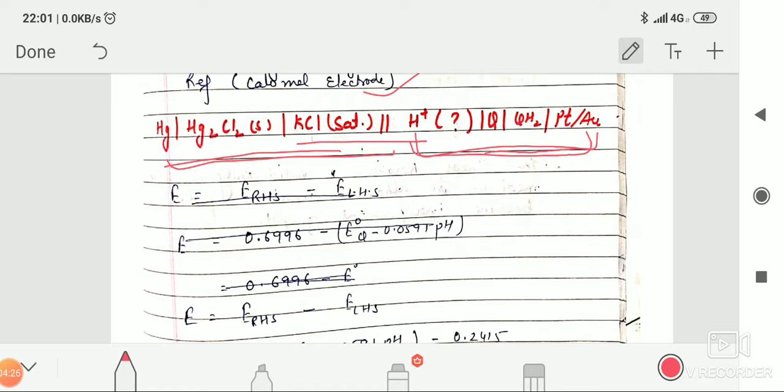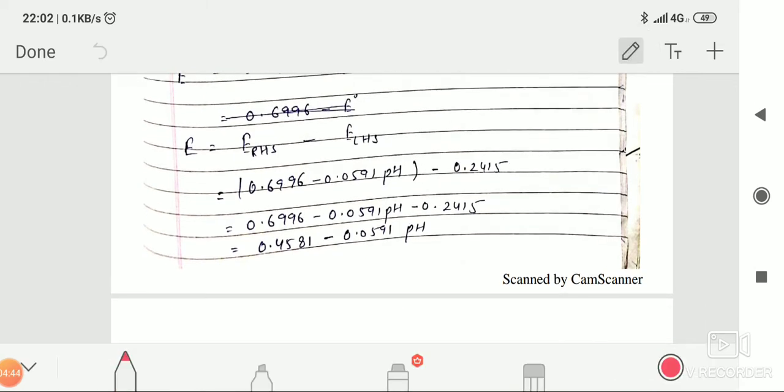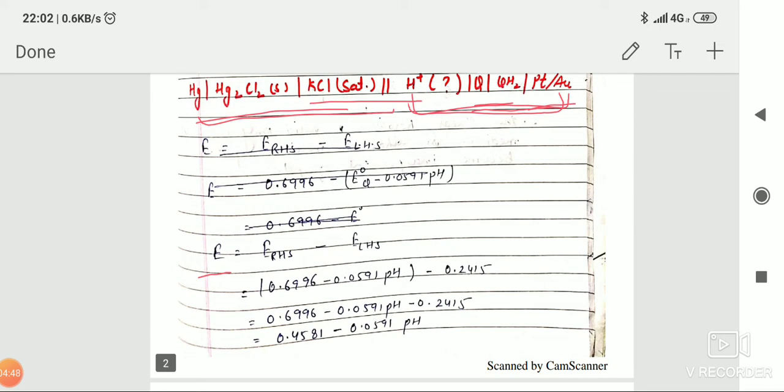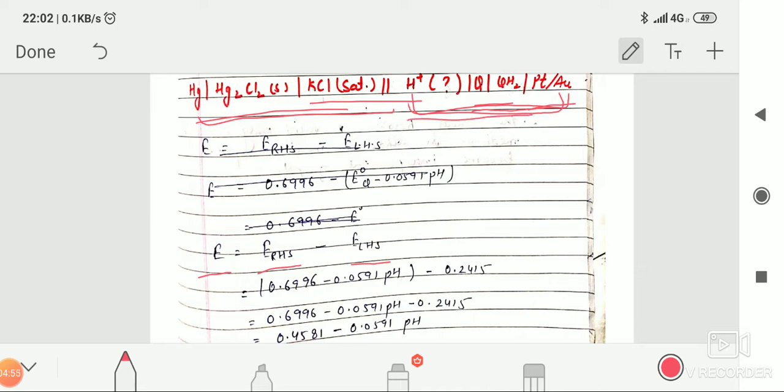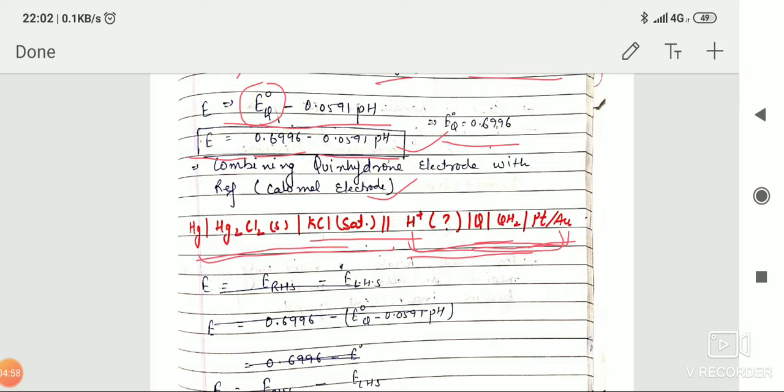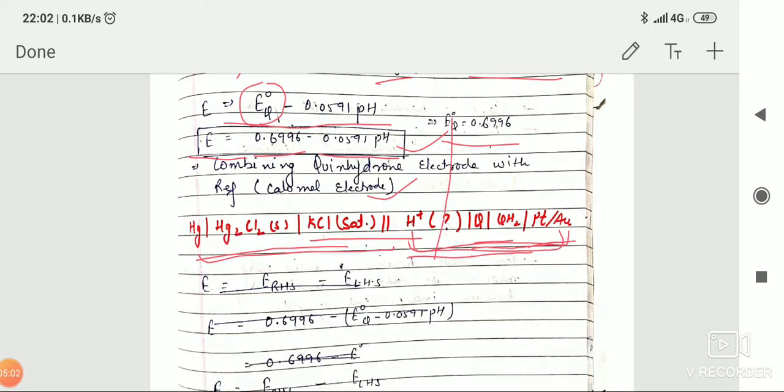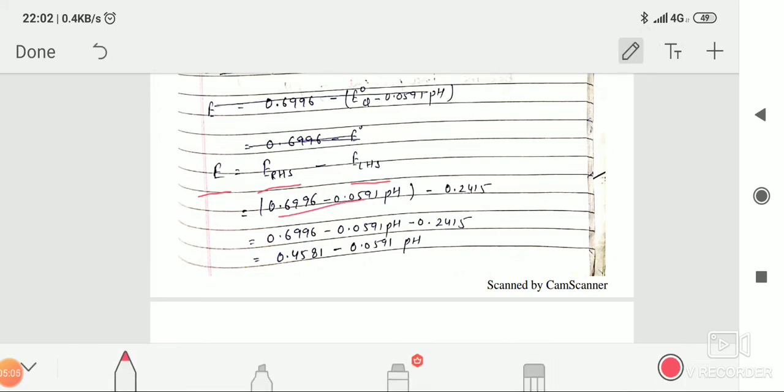As it was in hydrogen electrode, the quinhydron electrode, this half cell is constructed like this: a solution whose pH is to be determined contains some amount of crystals of quinhydron and platinum wire dipped in that solution. The EMF of this cell will be written like this: EMF of right-hand side electrode minus EMF of left-hand side electrode. EMF of right-hand side electrode we just calculated, that is 0.6796 minus 0.0591 pH. We put this value here, and the left-hand side electrode is the calomel electrode whose value is 0.2415. Upon solving, we get 0.4381 minus 0.0591 pH.